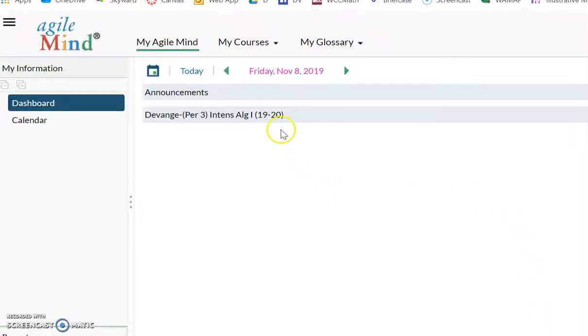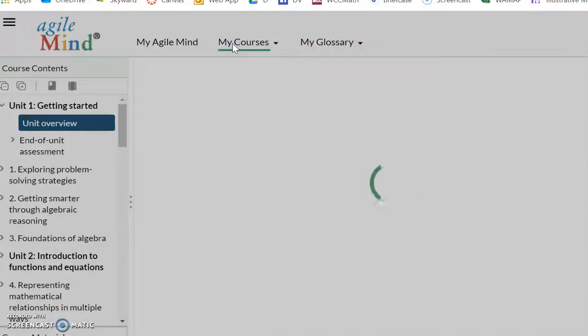I just want to show you real quick how to get to assignments, the assignment book that's online, in case you need to print out some pages if you're missing an assignment and you can't find the pages for it. Once you log on to Agile Mind, you go to My Courses and you pick your class.